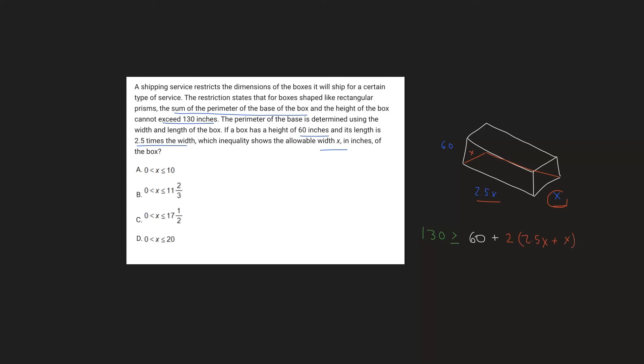All right, so now what we want to do is just expand this out. So 2 times 2.5x will just give us 5x. And then 2 times x is going to be 2x. And so we get 7x over here. So in our equation, we're going to have 60 plus 7x, and that is going to be less than or equal to 130.